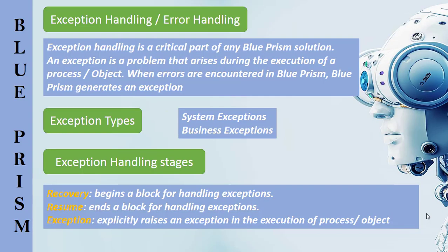Exception handling is a critical part of any Blue Prism solution. Focusing only on the happy path is not sufficient; the unhappy path must also be considered. An exception is a problem that arises during the execution of a process or an object. When errors are encountered in Blue Prism, Blue Prism generates an exception.